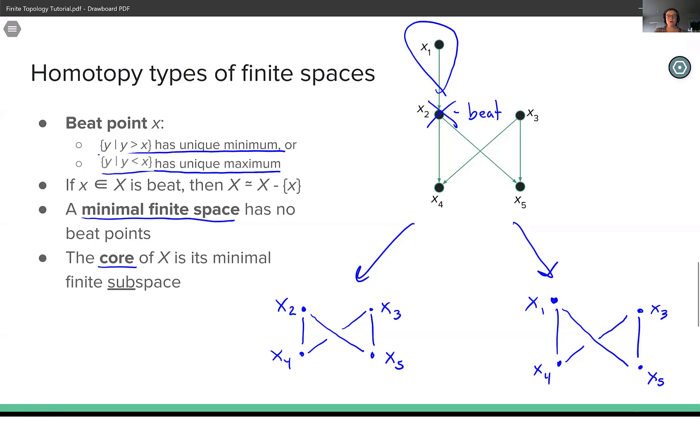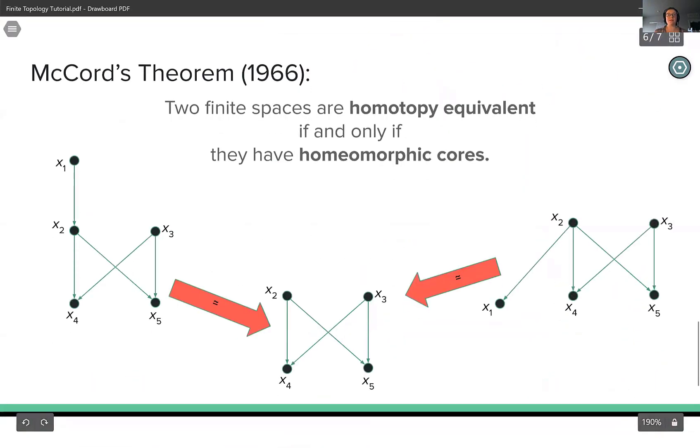Now, figuring out the core of a space is important because it brings us to McCord's theorem from 1966, which states that two finite spaces are homotopy equivalent if and only if they have homeomorphic cores. So these three spaces that I've drawn here are all homotopy equivalent to each other because they all have this central space as their core. And in this case, it's homotopy equivalent to a minimal finite model of S1.